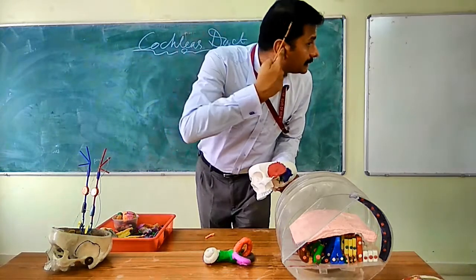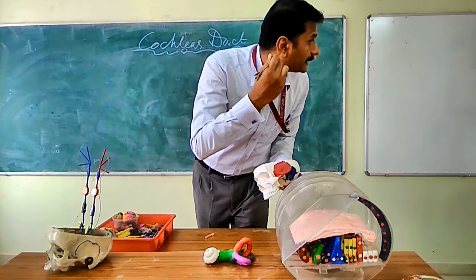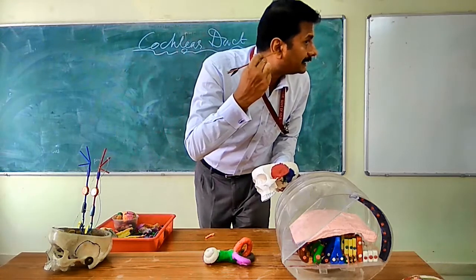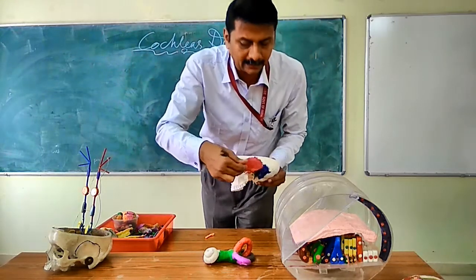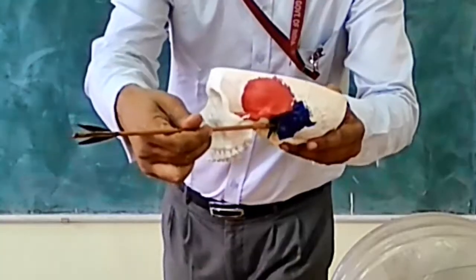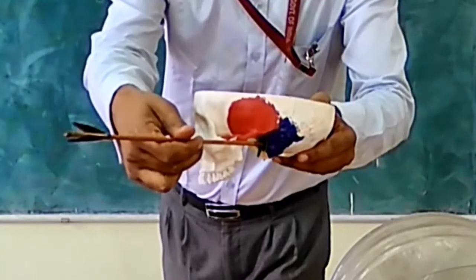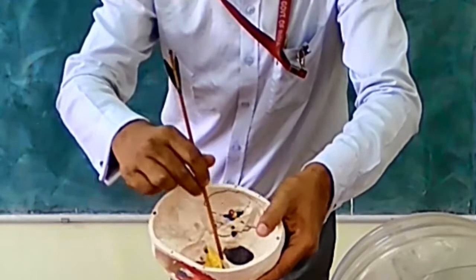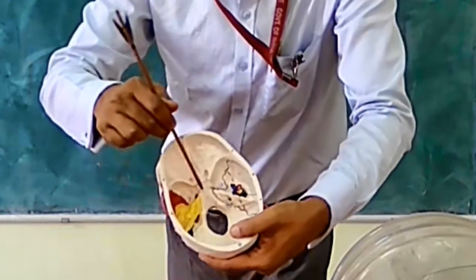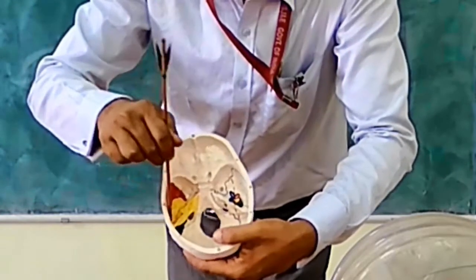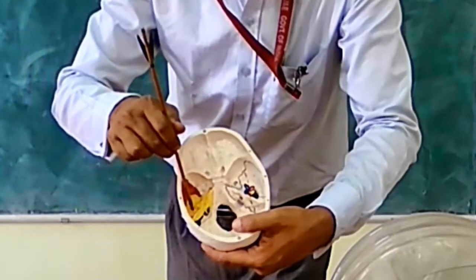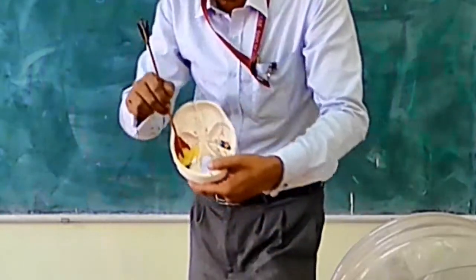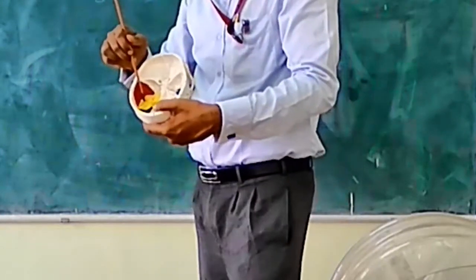You have the external ear canal — the outer one-third is the cartilaginous part and the inner two-thirds is the bony part. As you go in, you have the petrous part of the temporal bone, shown in yellow, which houses both the middle ear and the inner ear.